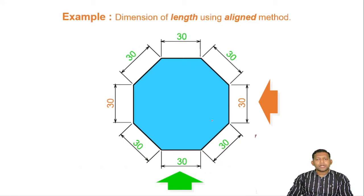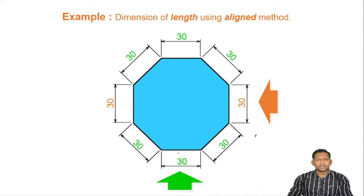So, the difference between aligned system and unidirectional system is shown in the figure. This is an octagon — you can see the octagon in general with 8 sides. You can see the arrow marks, the front line, the right side, and the left side shown in the figure.